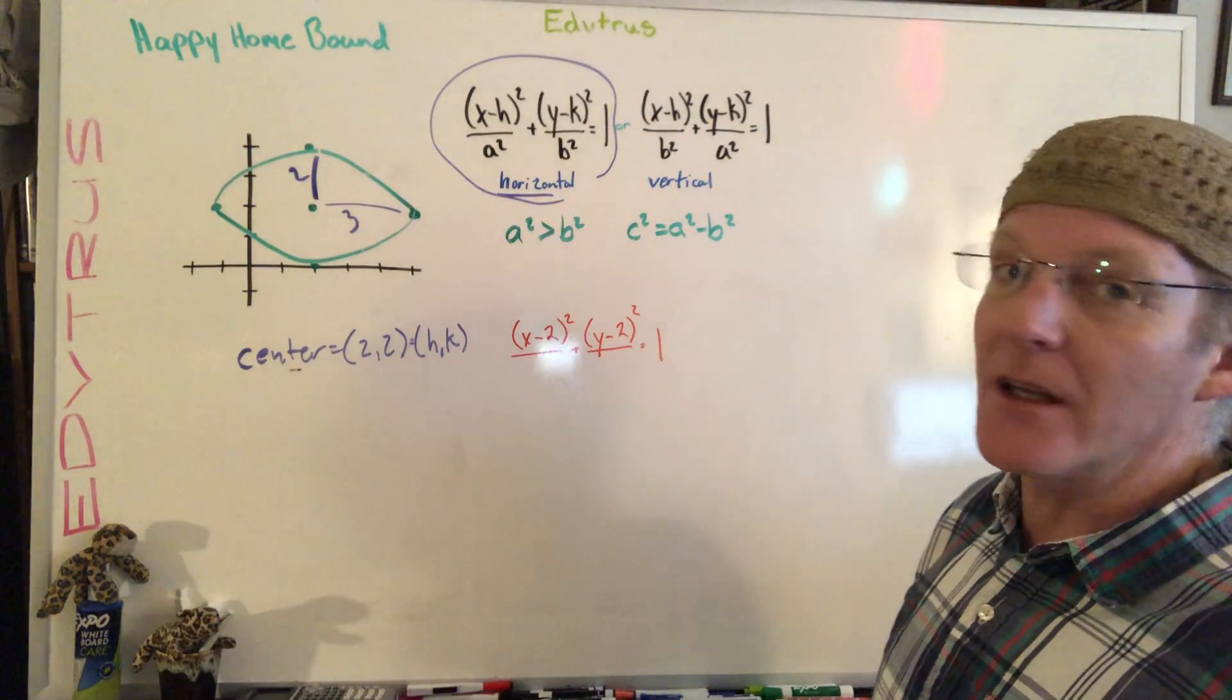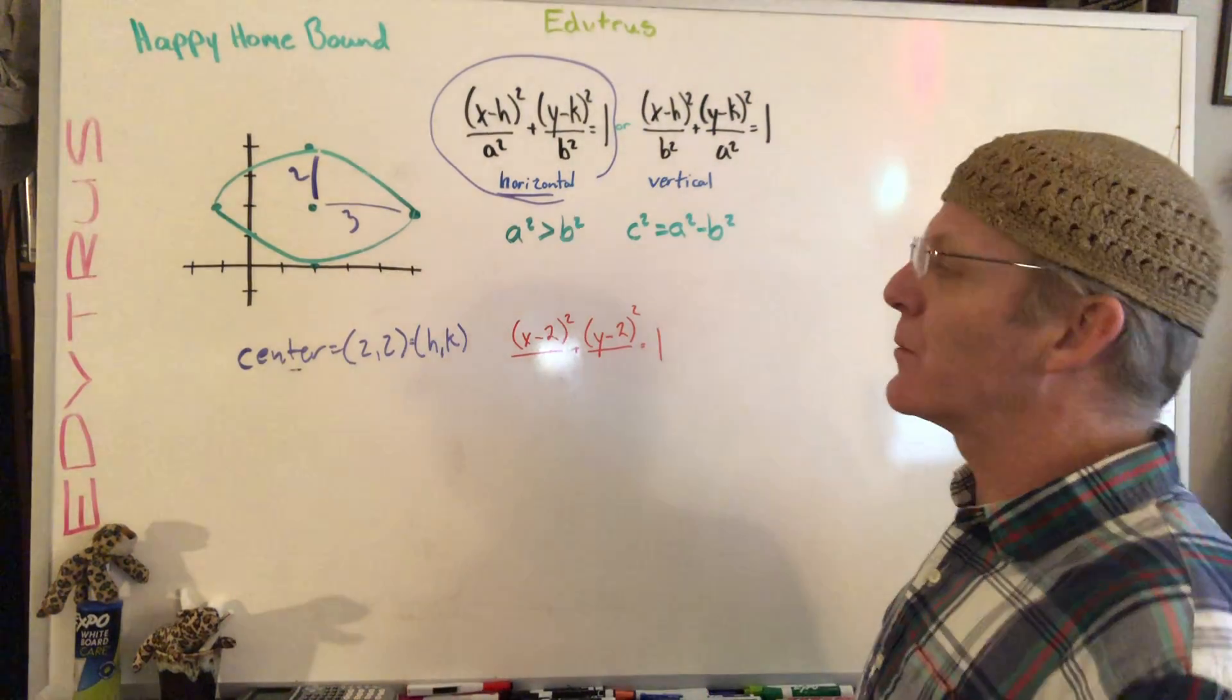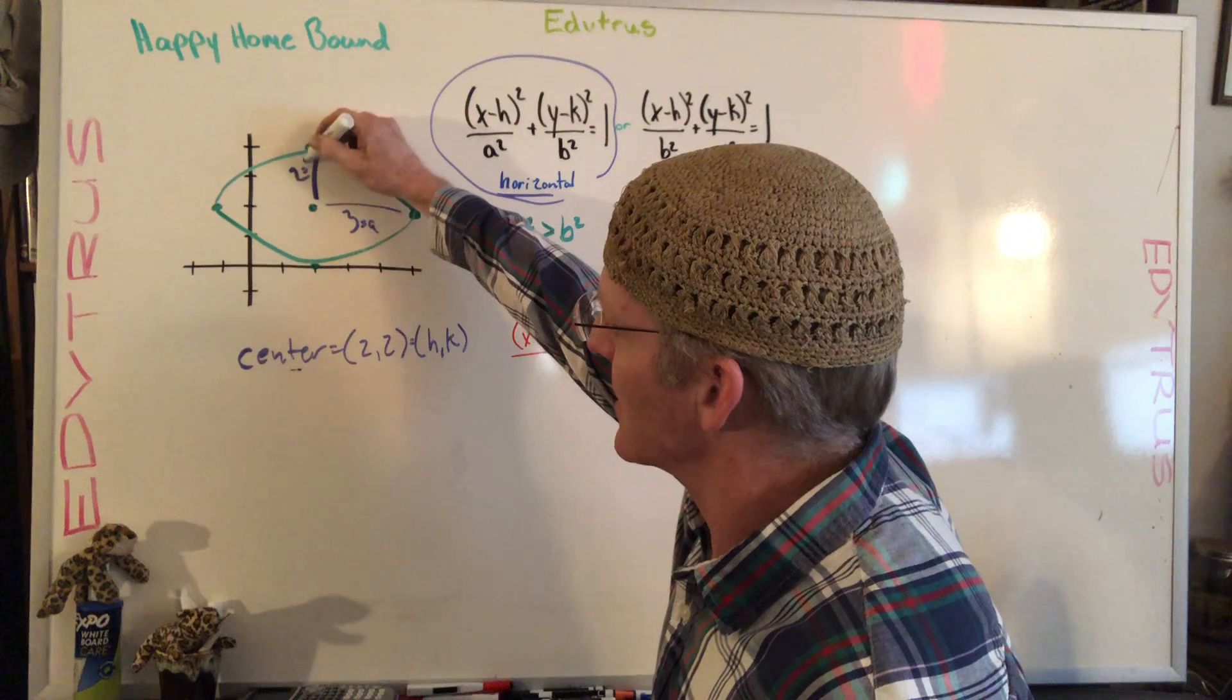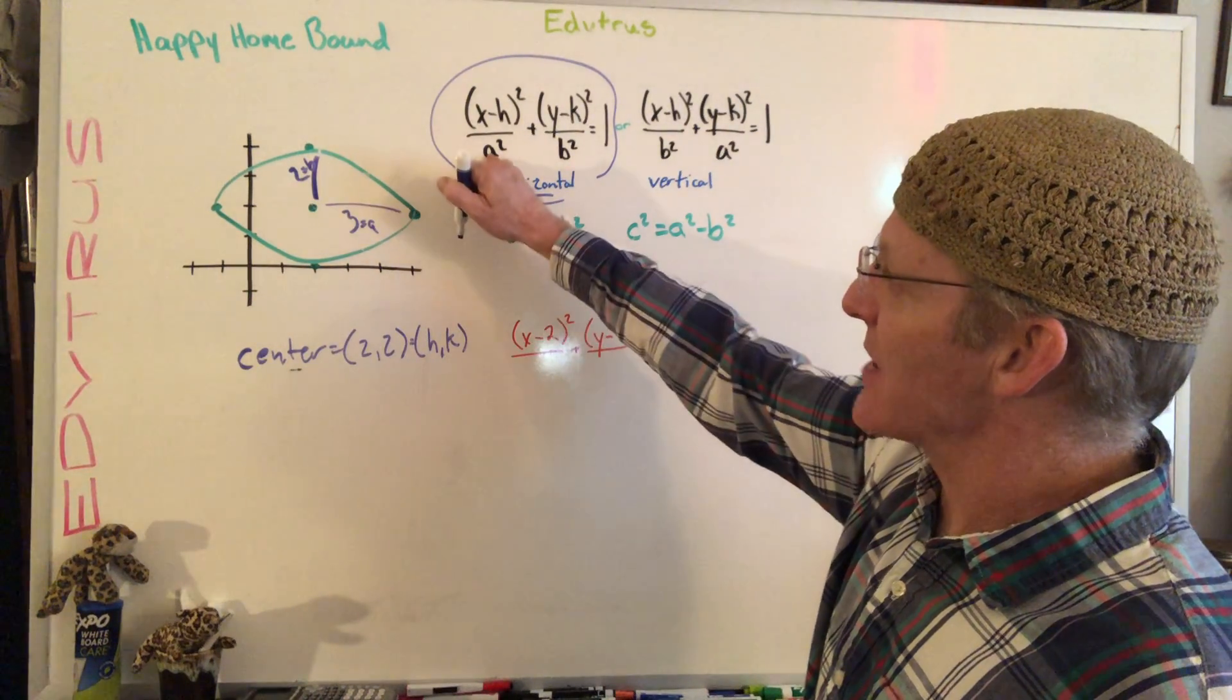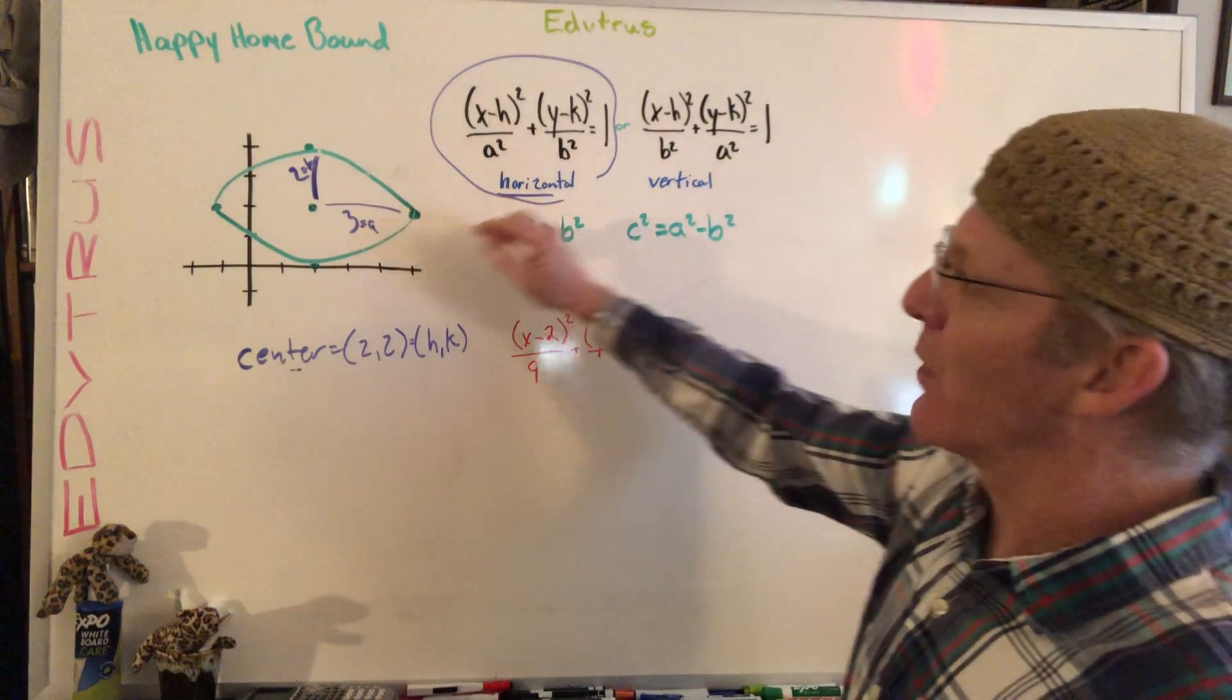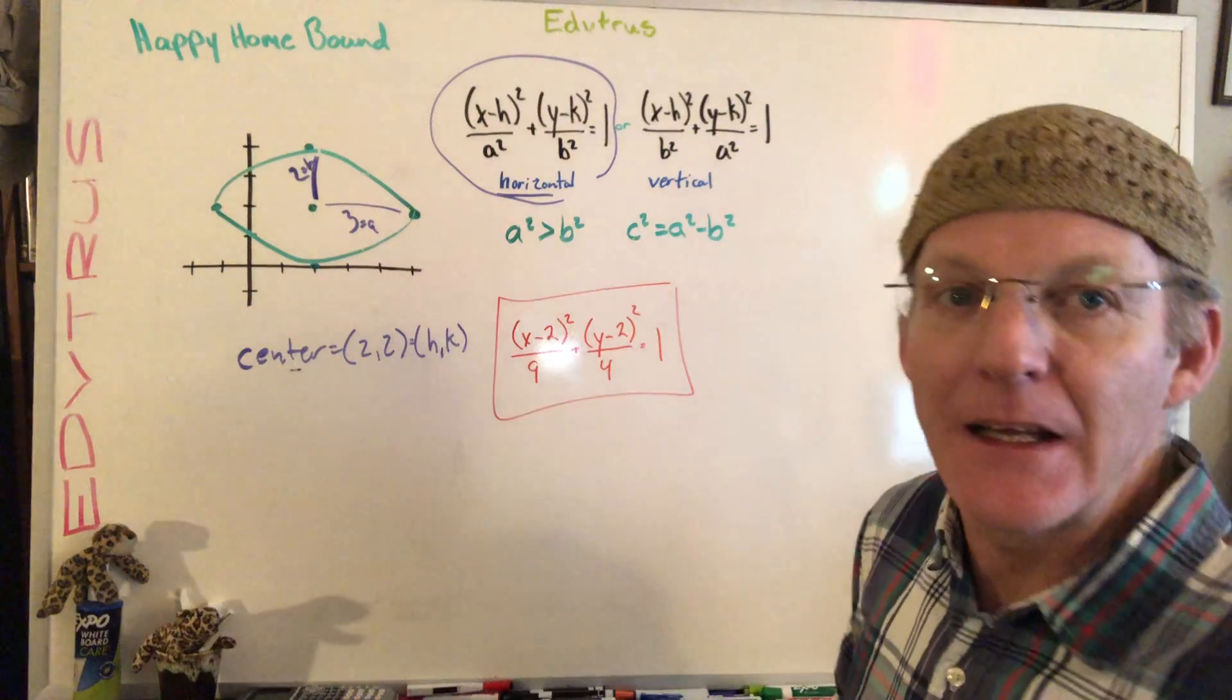We've got all that figured out. The only other thing we have to figure out now is a and b. Remember, a is always larger than b - a squared is always larger than b squared. When you look here, that's got to be our a value and this has to be the b value. So if that's the case, a squared, 3 squared, is going to be 9, and b squared, which is 2 squared, is going to be 4. So there would be our equation.